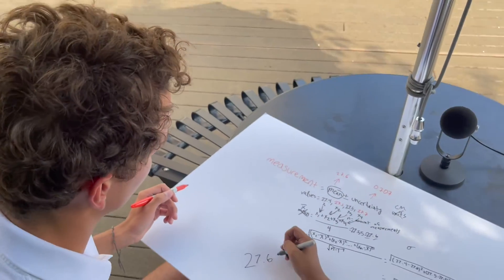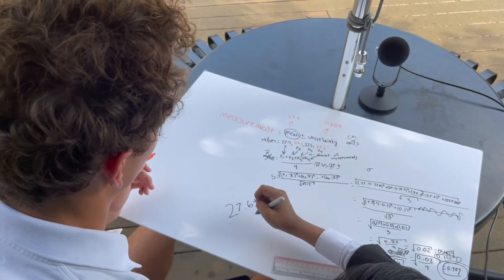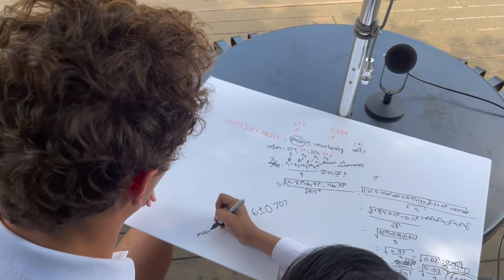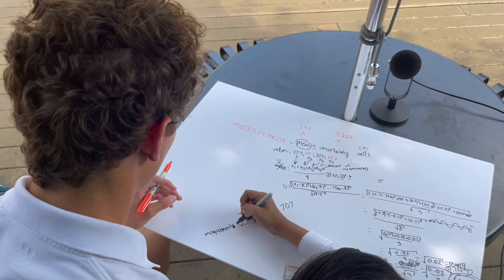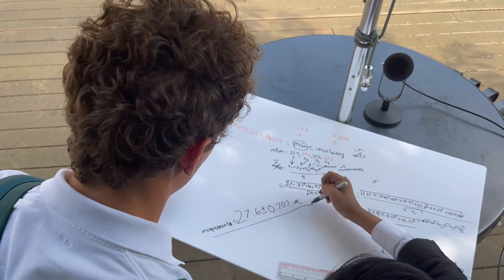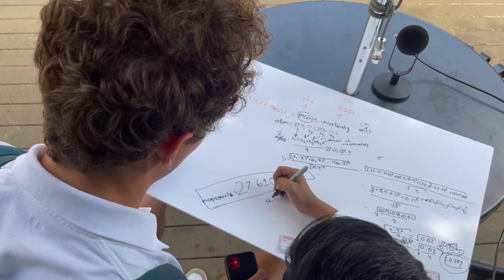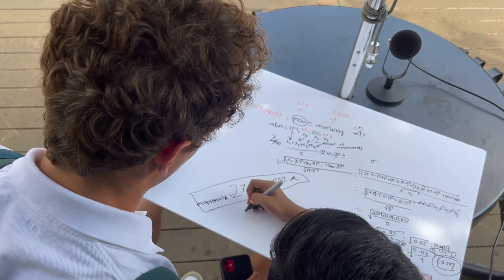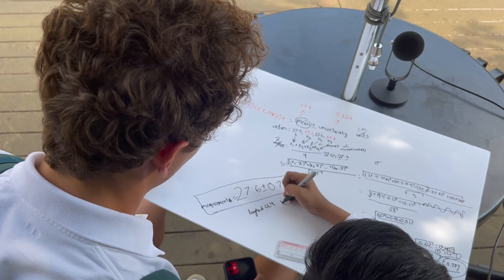0.707 — don't forget the units! So the maximum our measurement can be is 27.6 plus 0.707, and the minimum it can be is 27.6 minus 0.707. The middle value is 27.6 centimeters. So that's the length of the paper. High five! Alright, that's the answer. Thank you everybody for watching. Bye!